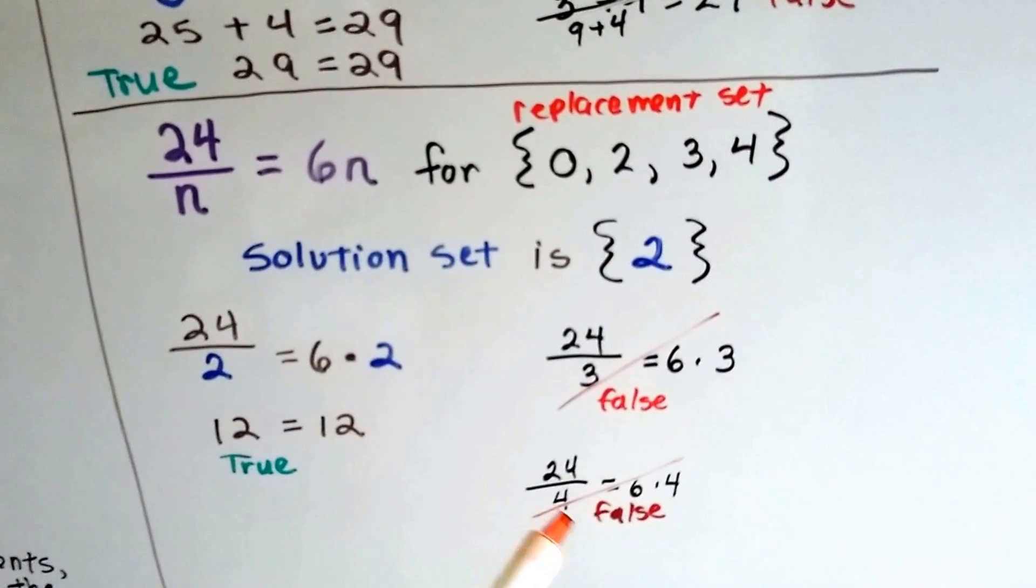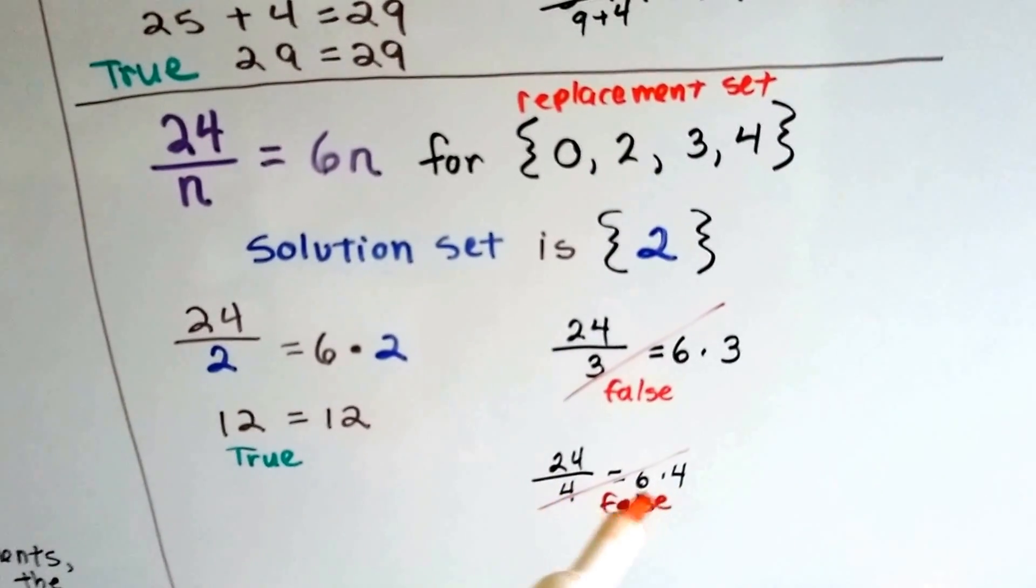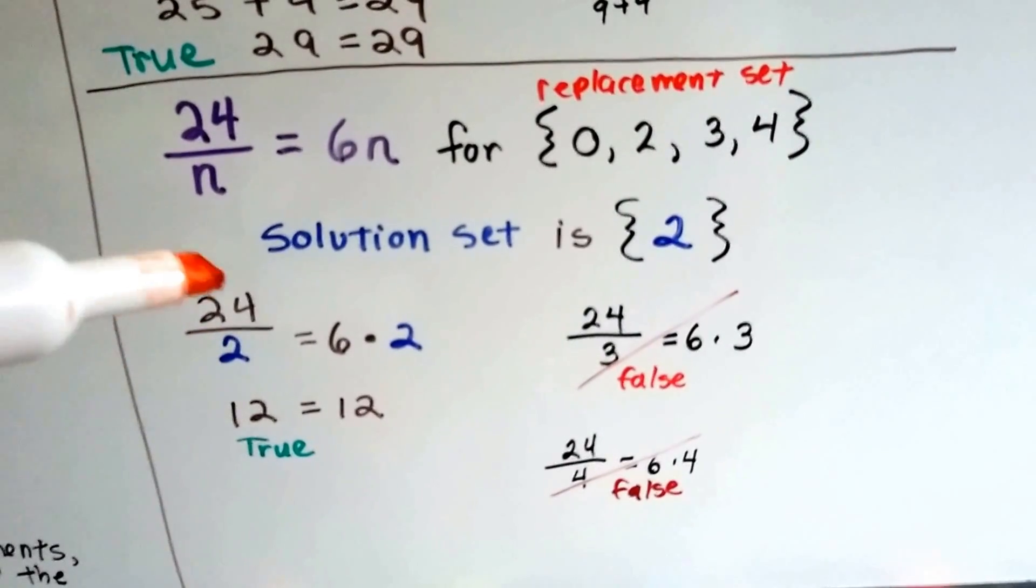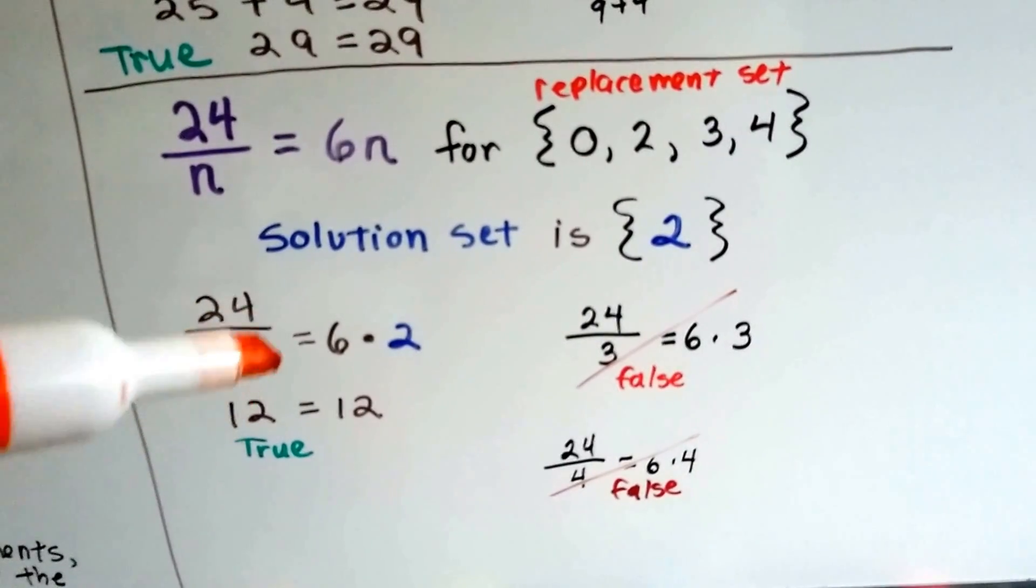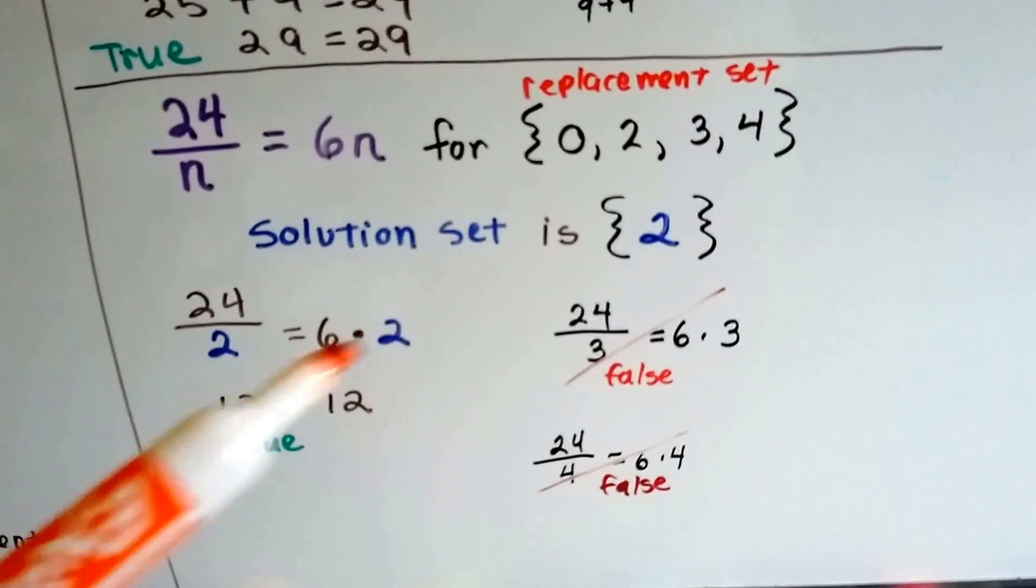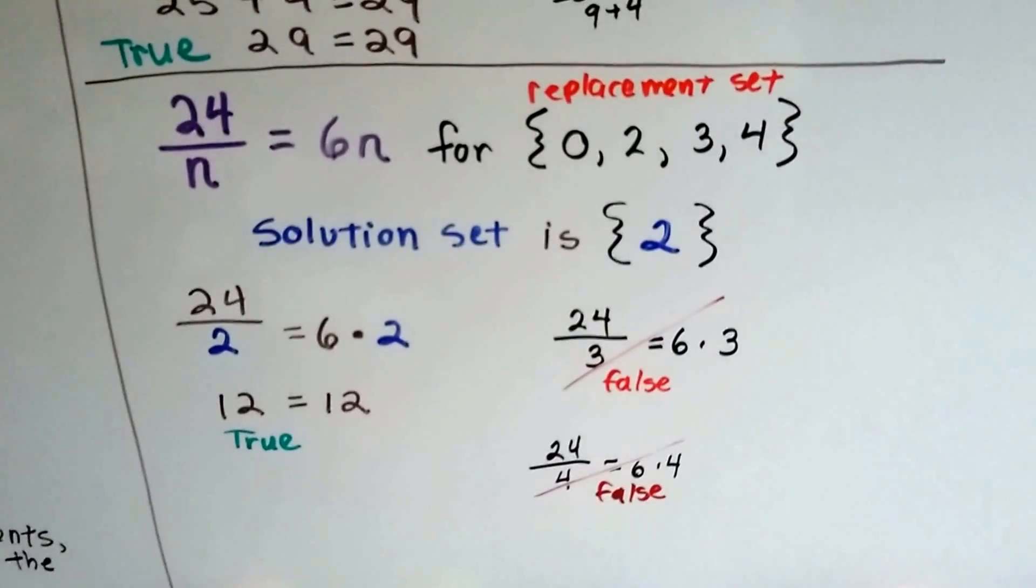24 divided by 4 is 6. And 6 times 4 is 24. 6 and 4 are not equal. That's false. When we plug in the 2, 24 divided by 2 is 12. And 6 times 2 is 12. So if we put a 2 in place of that n on each side of the equal sign, it makes a true statement. So our solution set is the 2.